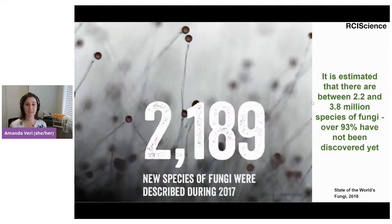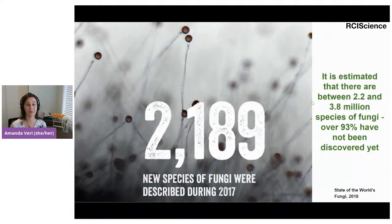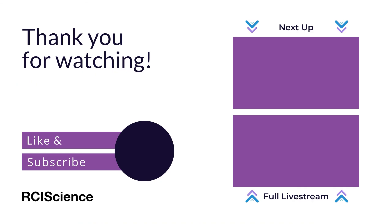One of my favorite things about fungi is that even though we know about all this diversity in function, size, and appearance, there's still so much more to be discovered. It's estimated that between 2.2 and 3.8 million species of fungi exist on earth, but over 93 percent have not yet been discovered. As we discover more, we'll really get to see how important fungi are for life on earth and beyond.